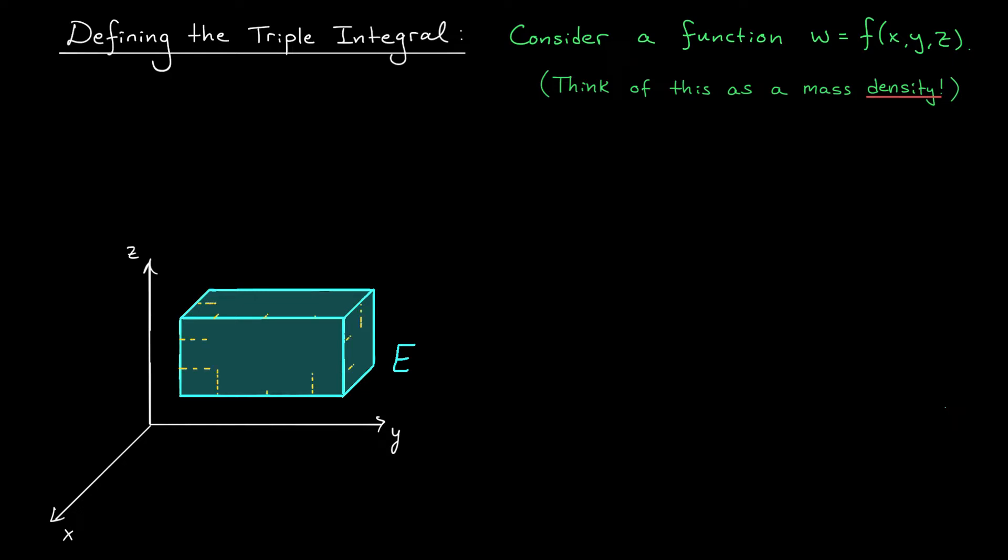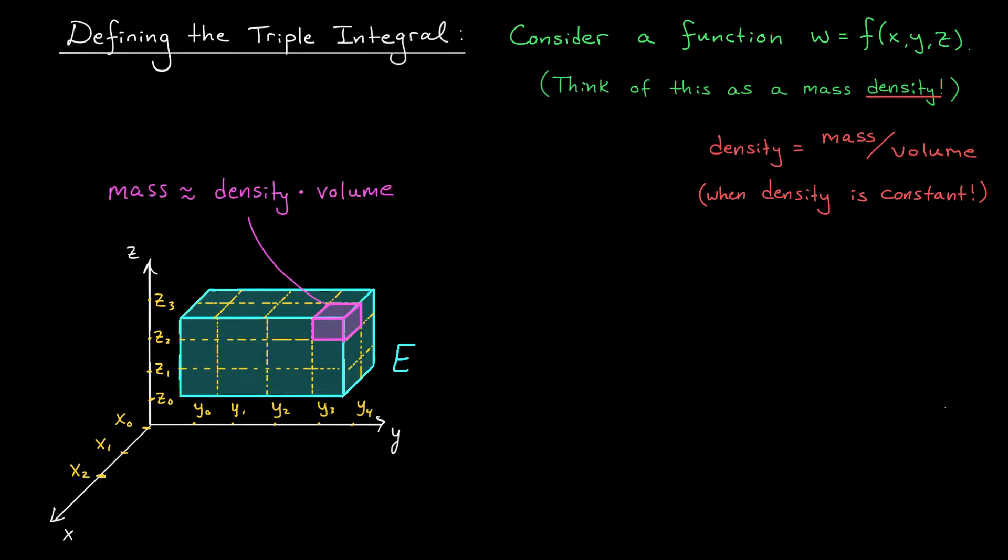Let's start by cutting up our solid into a bunch of tiny 3D pieces. Just like in the 2D case, on each of these pieces, the mass density should be relatively constant. It shouldn't change by too much. We can therefore make use of the formula density equals mass over volume, the 3D version of the formula from the last slide. Since the density is roughly constant on this piece, the mass of the piece is roughly density times volume.